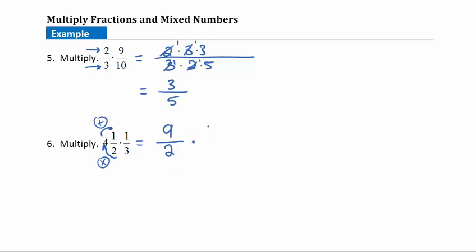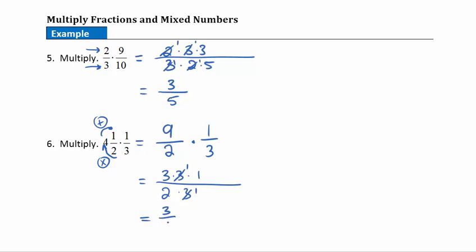Now I'm taking 9/2 times 1/3. Going across the top: 9 factors into 3 times 3, then times 1. Going across the denominators: 2 times 3. These share a common factor of 3, so I'll divide that out. In the numerator I have 3 times 1, or 3. In the denominator I have 2 times 1, which is 2. I'm ending up with the improper fraction 3/2.